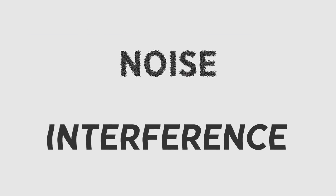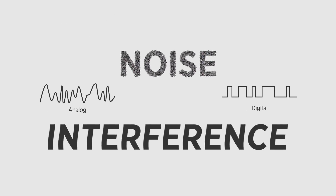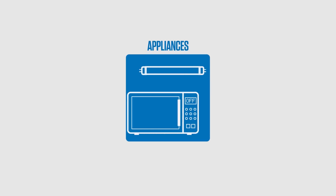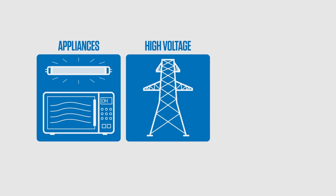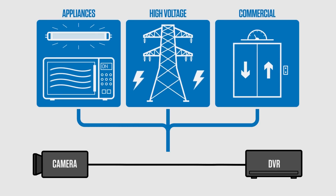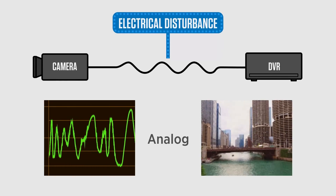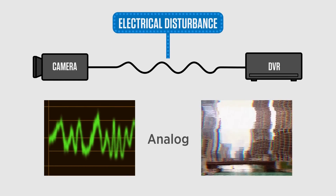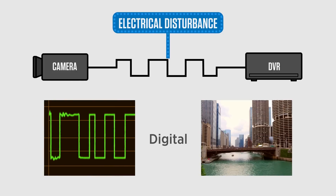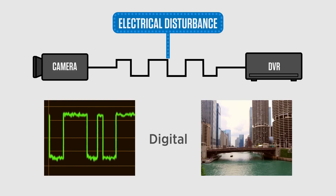We've mentioned noise and interference a bit. Let's look at the differences in how analog and digital signals handle interference. Analog technology is very susceptible to interference. There are potential sources of interference everywhere, from fluorescent lights, microwaves, high voltage power lines, elevators, and more. This external interference can cause the image to be noisy, exhibit horizontal banding, tearing, or not display at all. Digital technology is far less susceptible to interference and noise, especially when using properly shielded cable, making it a much better method of data transmission.